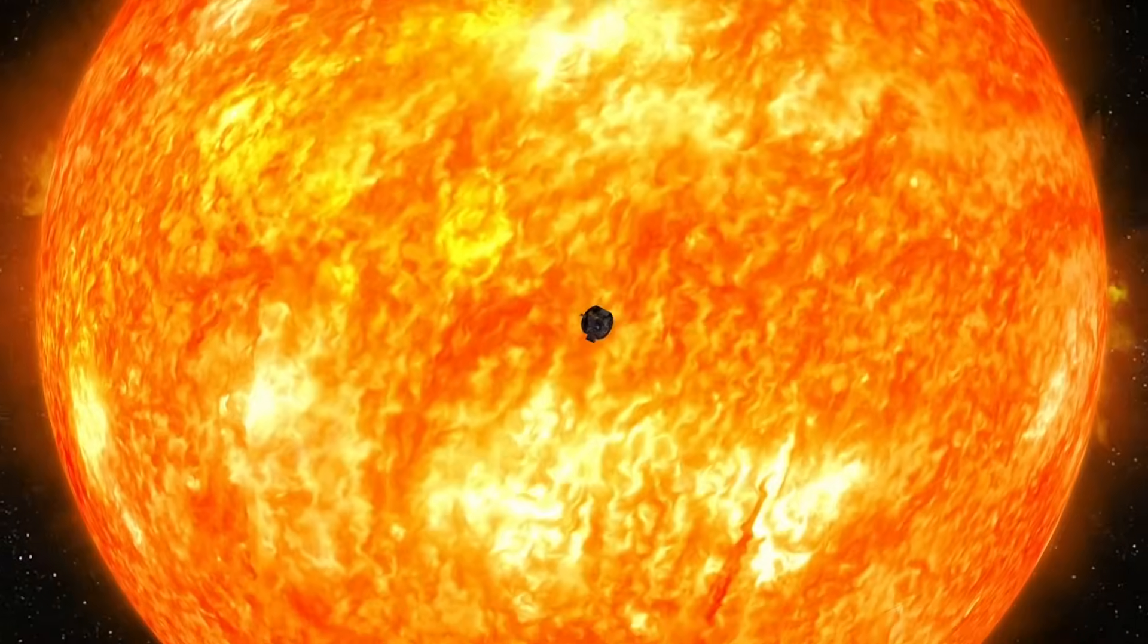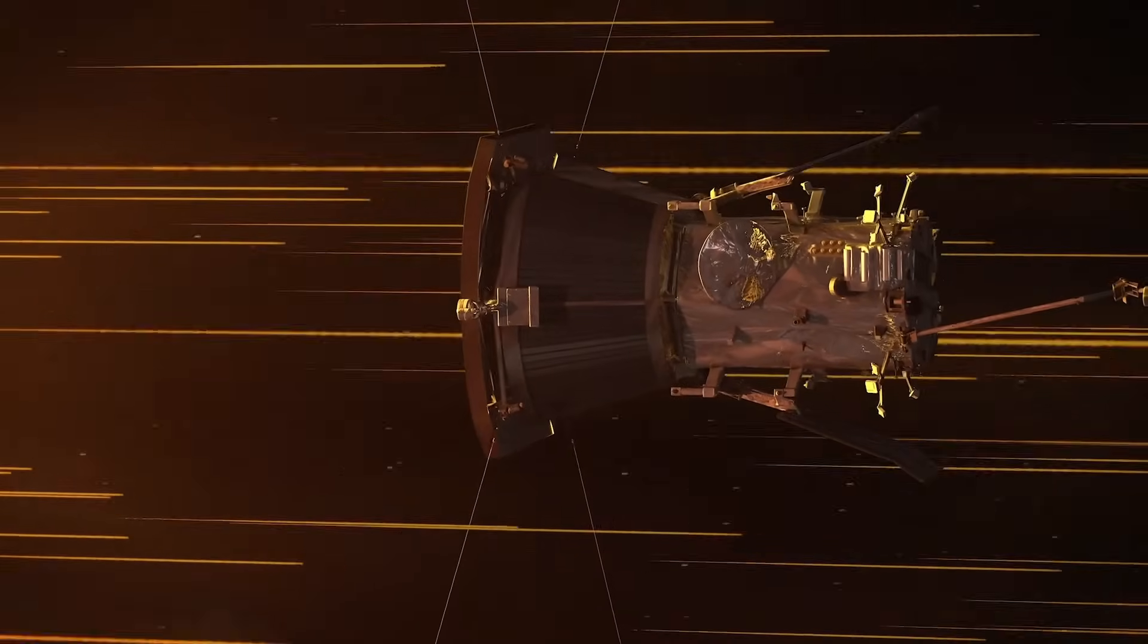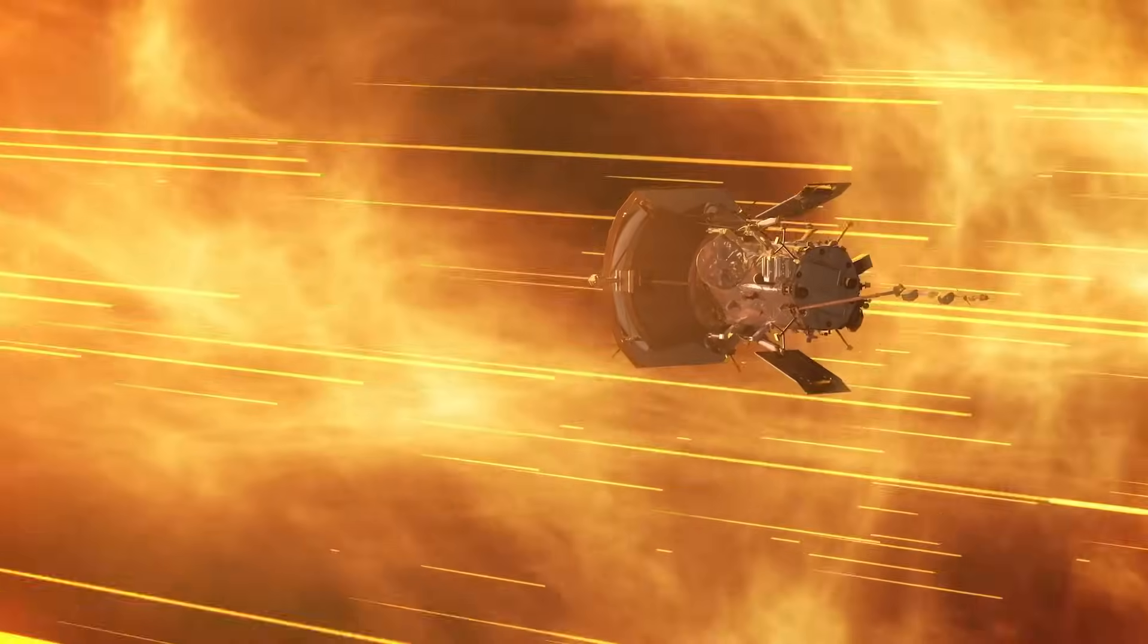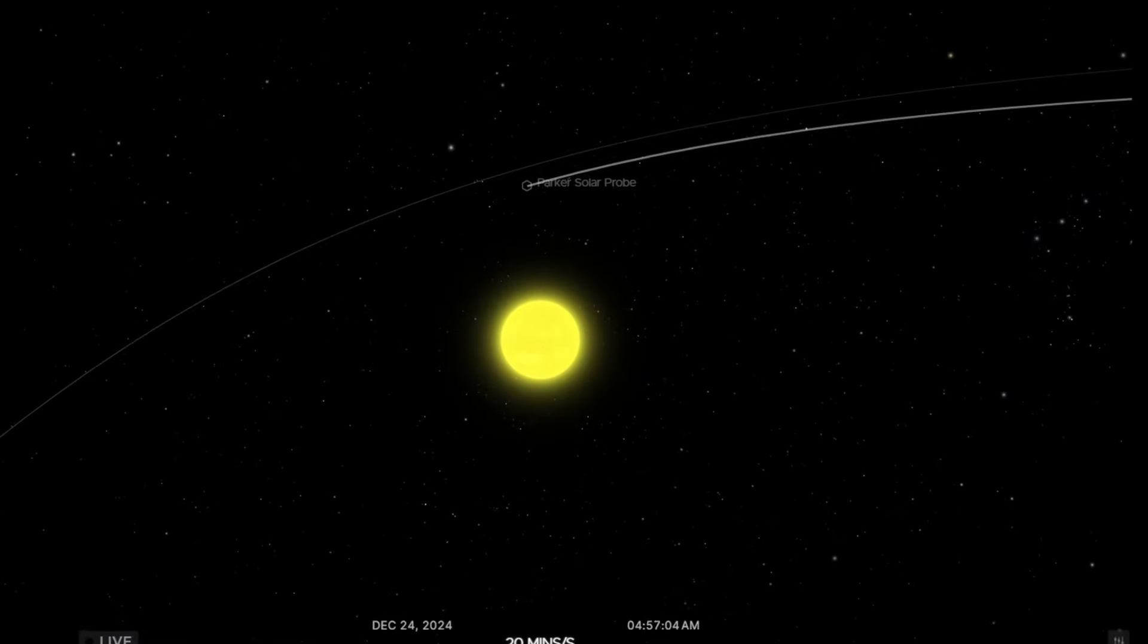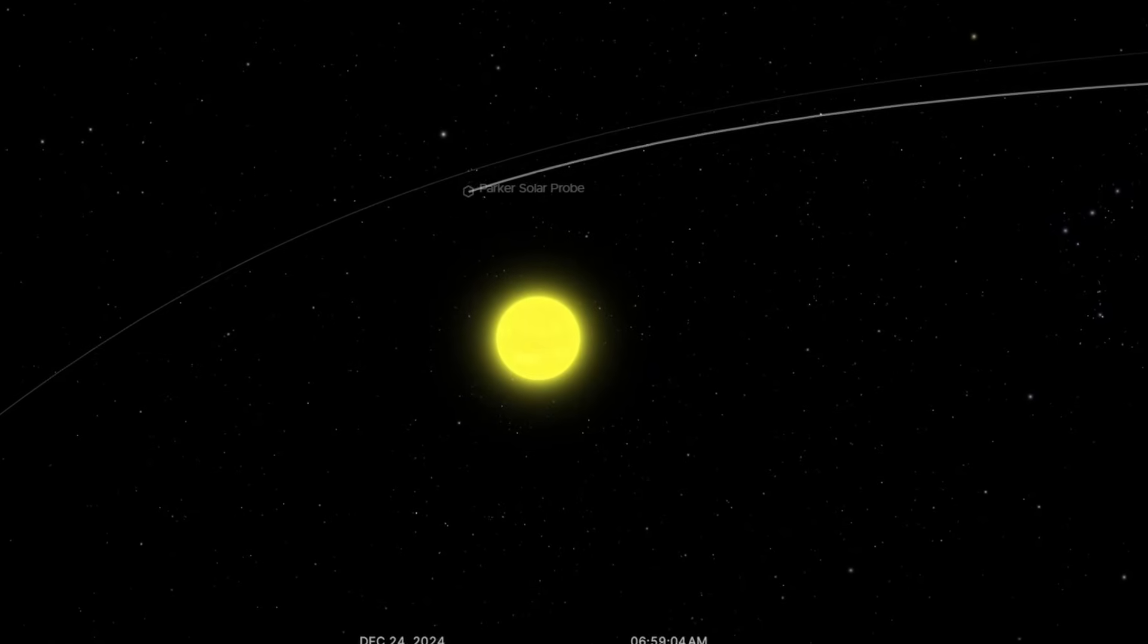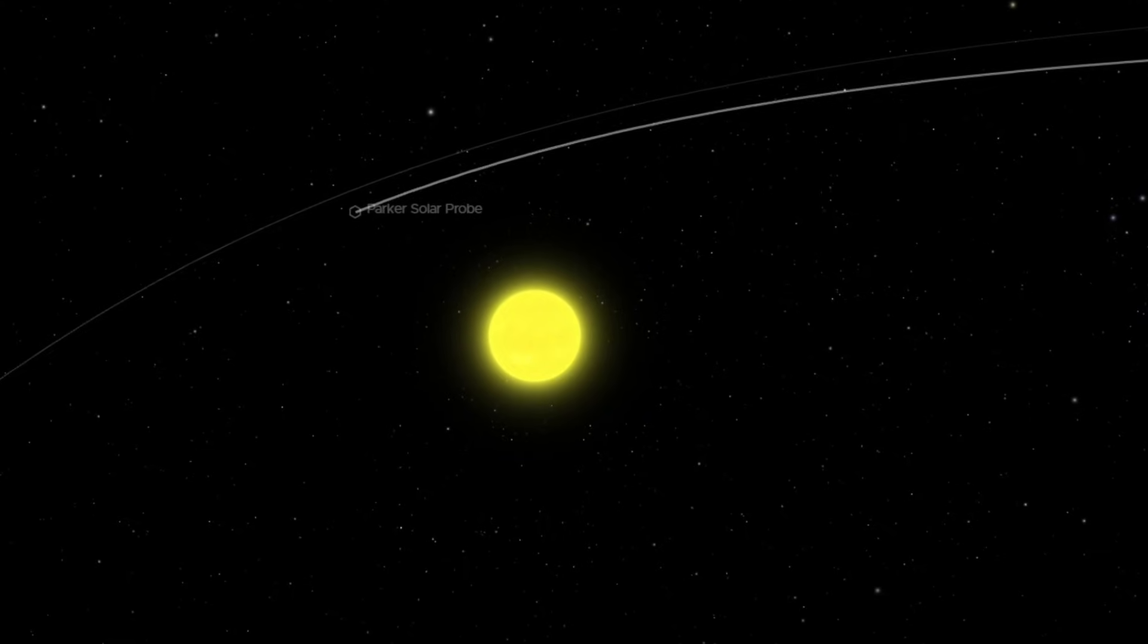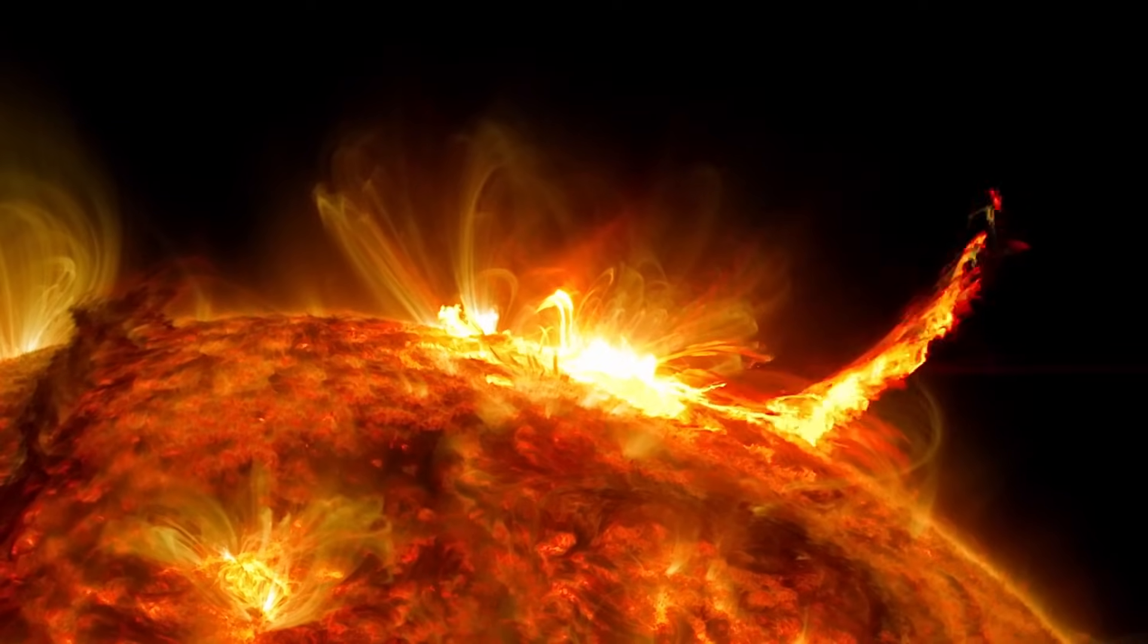During this perihelion—the point at which it is closest to the sun—the Parker Solar Probe set new records. It approached within 3.8 million miles of the sun's surface, the closest any human-made object has ever been. As we mentioned earlier, the spacecraft reached speeds of approximately 435,000 miles per hour, making it the fastest human-made object to date. It also had to endure extreme temperatures of approximately 2,500 degrees Fahrenheit—that's 1,370 degrees Celsius.